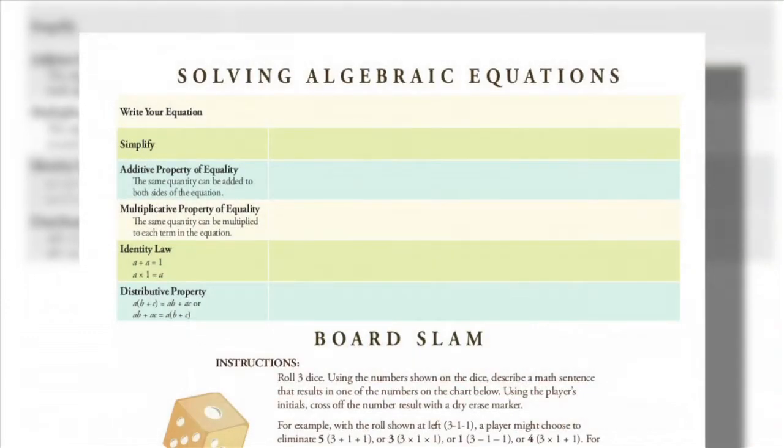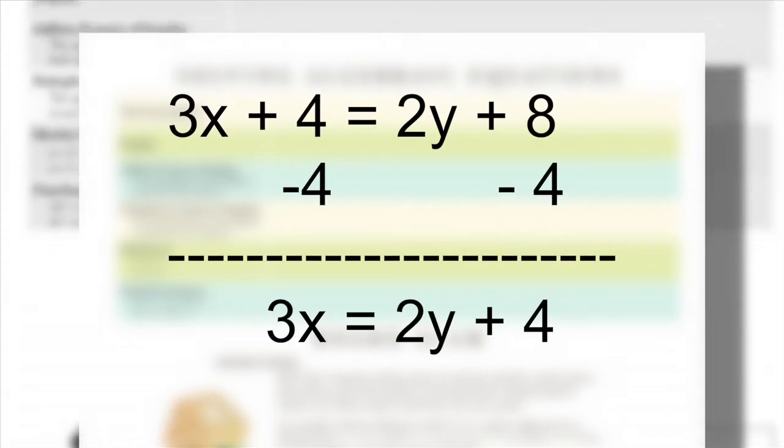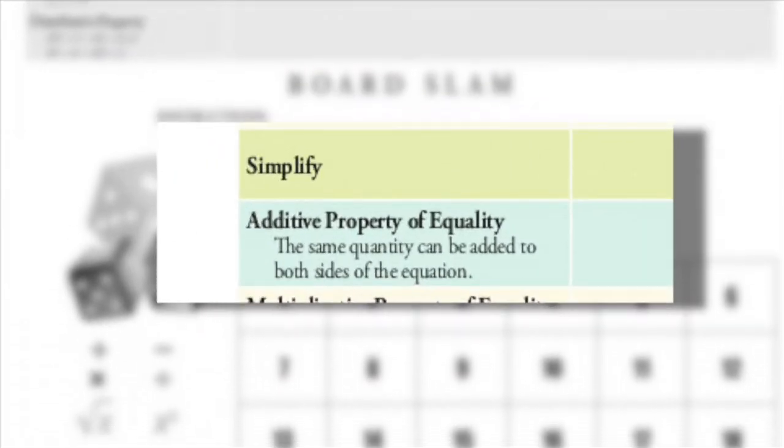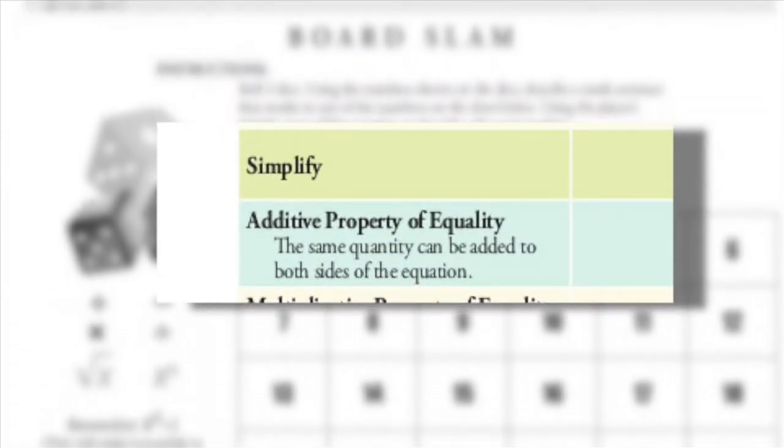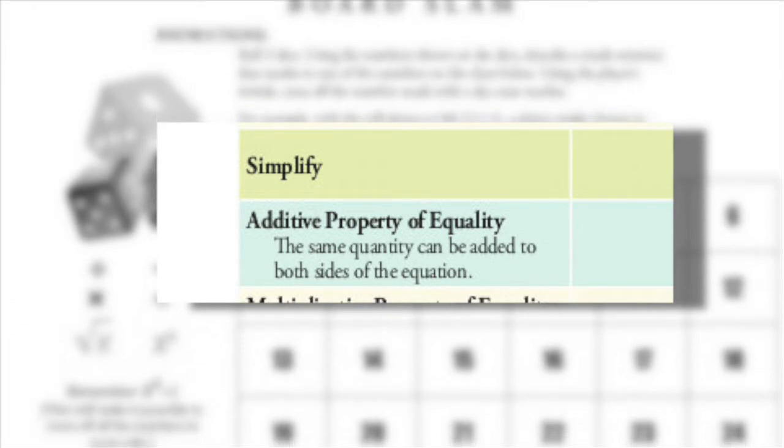The second reminder is to consider using the additive property of equality. For example, if you had the equation 3x plus 4 equals 2y plus 8, you could use this property to subtract 4 from both sides, which would result in 3x equals 2y plus 4. Students can often apply this property, but seldom can explain why. This chart will help them to understand the concept and the property in a deeper way.